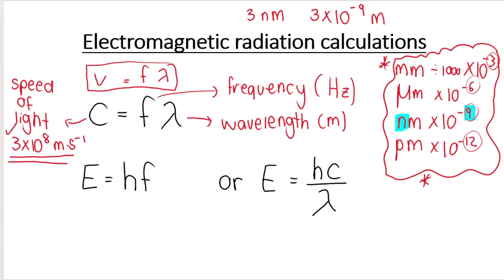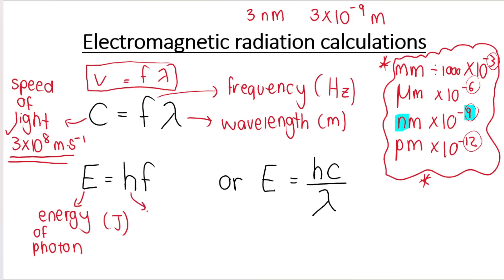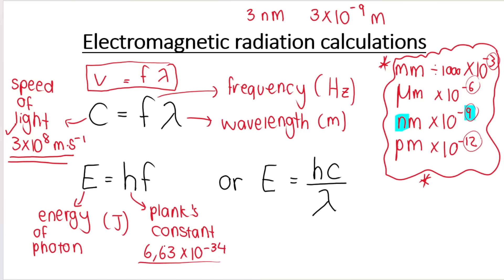Our second formula is the one we use to calculate the energy of a photon — most likely the energy of a photon or a packet of light. Energy is always measured in joules, J. F is frequency — you know what frequency is. And h is called Planck's constant. Notice the word constant — it will always have the value of 6.63 times 10 to the negative 34, and that will also be given to you on the formula sheet.